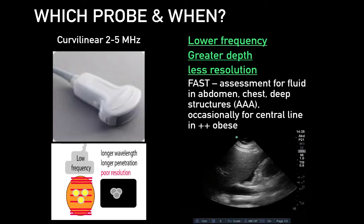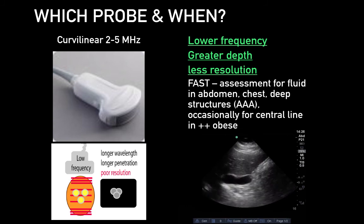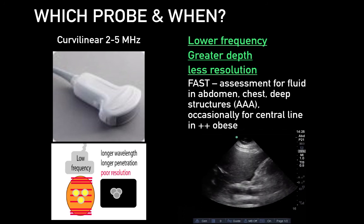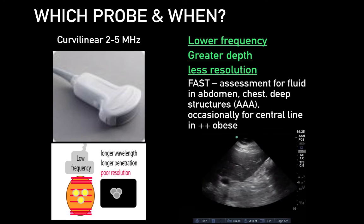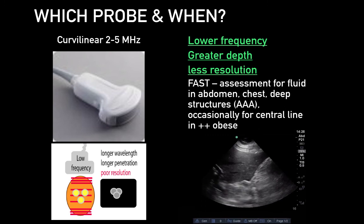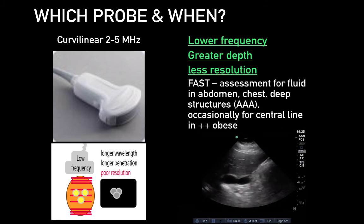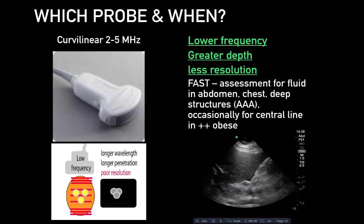The curvilinear probe is 2 to 5 MHz in the lower frequency range — it gets great depth but less resolution. This is often used in the FAST exam to assess for fluid in the abdomen, chest, and deep structures. It is very useful for abdominal aortic aneurysms and can occasionally be used for central line insertion in the very obese. The crystalline long curved surface generates a beam that fans outward with a wide footprint, resulting in a field of view wider than the probe's footprint, with a sector-shaped image. These probes are most often used in abdominal and pelvic diagnostic applications but can be easily applied to the chest.